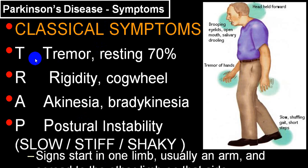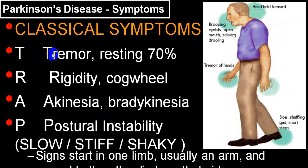Classical symptoms are described by the mnemonic TRAP: T for Tremor — resting tremors present in about 70% of patients; R for Rigidity — specifically cogwheel rigidity; A for Akinesia or Bradykinesia; and P for Postural instability. Hence it is also described as slow, stiff, and shaky — slow means akinesia, stiff means rigidity, shaky means tremor. Signs usually start unilaterally, most commonly in the upper limb, and then spread to the other side and the entire body.